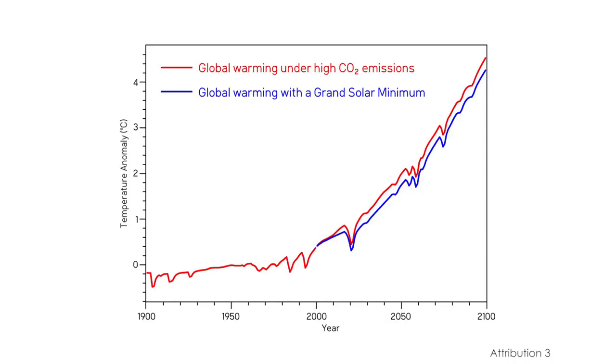What would happen to future global warming if the sun's output fell down to Maunder Minimum levels? Several teams of scientists have investigated this question. All of the studies agree. Even if the sun entered another quiet period like the Maunder Minimum, the drop in sunlight would only be enough to offset about one decade's worth of human-caused global warming.